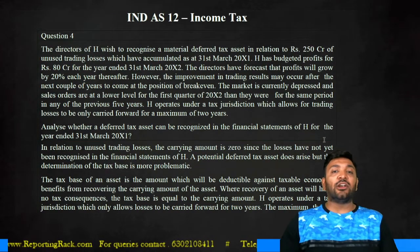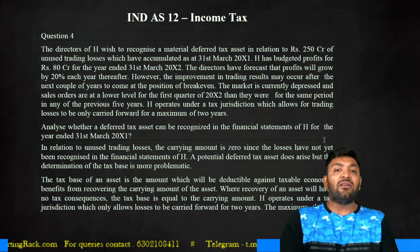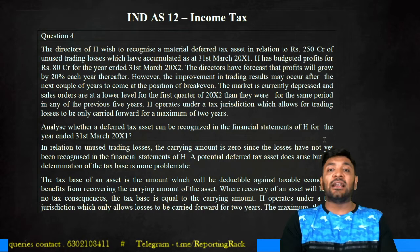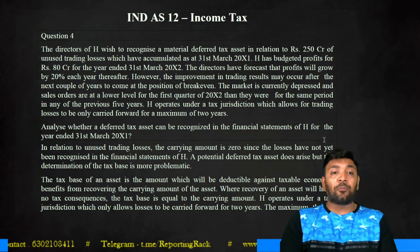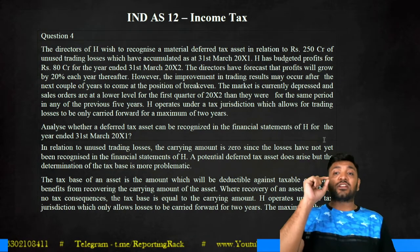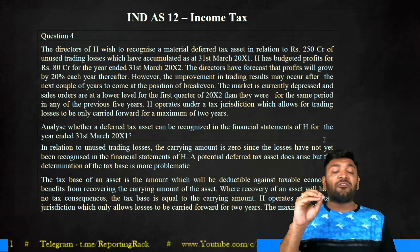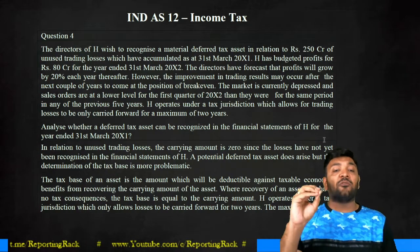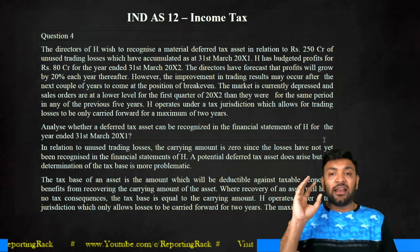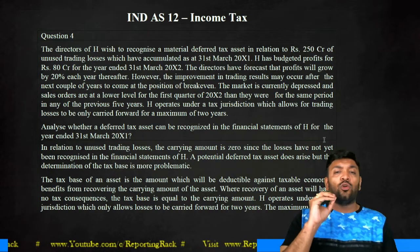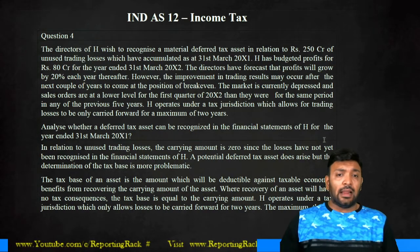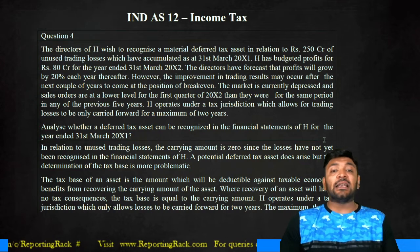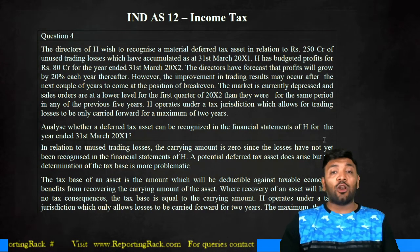Now questions related to income tax — Ind AS 12. The director of Hedge Limited wishes to recognize a material deferred tax asset in relation to 250 crores of unused trading losses accumulated as on 31st March 2011. Hedge has budgeted profit of 80 crores at 31st March 2012. The director forecasted profits will grow at 20% thereafter. However, improvement in trading profits may occur only after the next couple of years. The market is currently depressed and sales orders are at the lowest level. Hedge operates in a tax jurisdiction where trading losses can be carried forward for a maximum of two years.